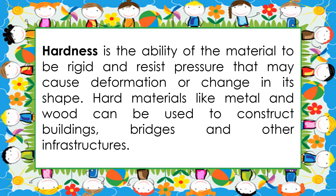Let's discuss the different physical properties. Number one is hardness. It is the ability of the material to be rigid and resist pressure that may cause deformation or change in its shape. Hard materials like metal and wood can be used to construct buildings, bridges, and other infrastructures.